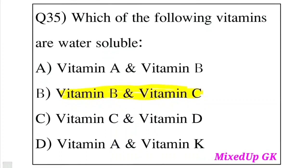Question 35: Which of the following vitamins are water-soluble? Option A: Vitamin A and B. Option B: Vitamin B and Vitamin C. Option C: Vitamin C and Vitamin D. Option D: Vitamin A and Vitamin K. The answer is Option B, Vitamin B and Vitamin C. Vitamins B and C are water-soluble.